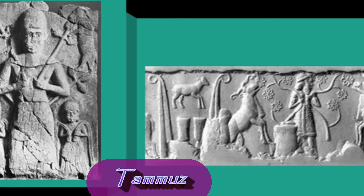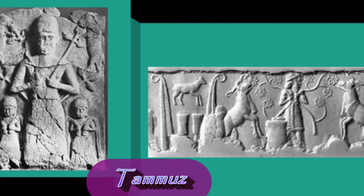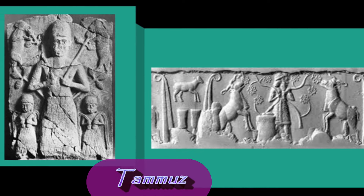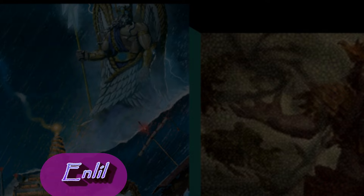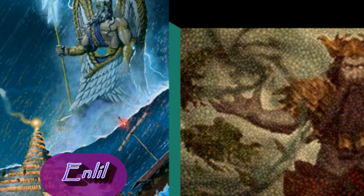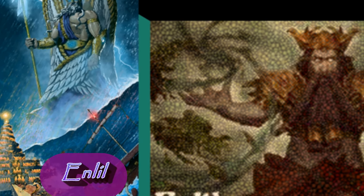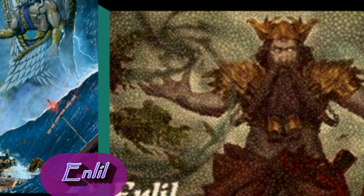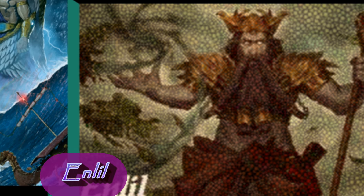We also meet Tammuz, the god of vegetation and fertility. Also called the shepherd, he was born immortal, and Tammuz is the husband of Ishtar. We also meet Enlil, god of earth, wind, and air — a superior deity. Enlil is not a big fan of humankind, and he's actually the one who decides to cause the Great Flood.